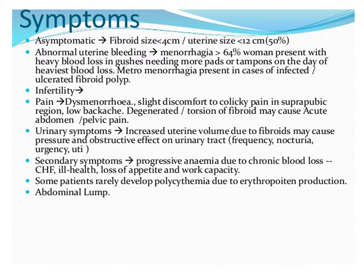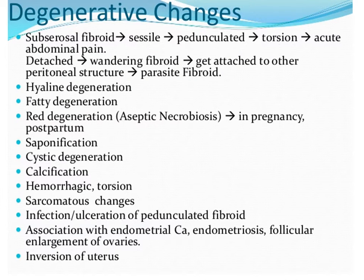Other symptoms secondary to fibroids include progressive development of anemia due to chronic blood loss, which leads to ill health, loss of appetite, and reduced work capacity. Some patients rarely develop polycythemia, because fibroids are said to cause increased erythropoietin production. The patient can also present with an abdominal mass or lump.